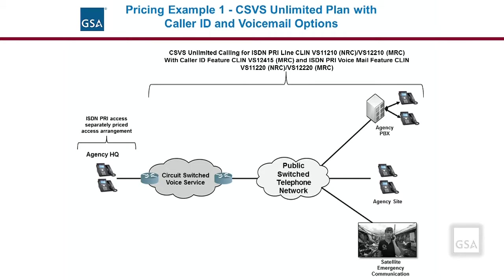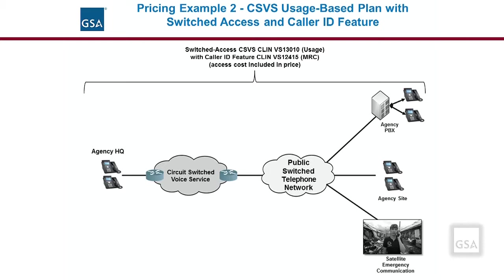This example shows a circuit-switched voice service unlimited or flat rate option with the caller ID general feature and the ISDN PRI option voicemail. As mentioned previously, the unlimited CSVS calling is only available when ordered with the EIS basic subscriber line, ISDN PRI, or ISDN BRI access arrangement. The access cost is separate and not included in the CSVS service.